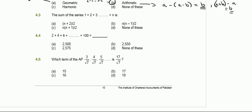Question 4.3: find the sum of the series 1 plus 2 plus 3 dot dot dot plus n. There are two formulas for the sum of an arithmetic progression. We know this is an arithmetic progression since consecutive terms have a difference of one. We also know the first term and the last term, so we use the formula S equals half into n into (a plus l).